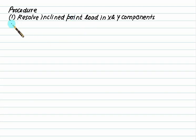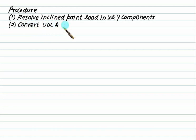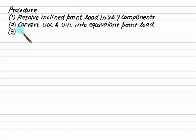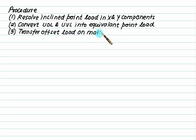Step two: suppose we have a UDL, UVL, and couple — try to convert all these types of loads into point loads using the concept of the area of the given figure and the corresponding centroid. Convert UDL and UVL into equivalent point loads. Step three: if you have any offset load (eccentric load), shift that load onto the main beam using the moment concept.